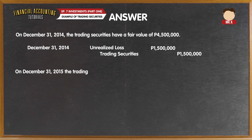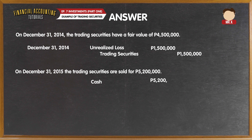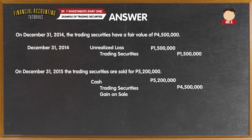Lastly, on December 31, 2015, the trading securities are sold for 5,200,000 pesos. The sale is recorded by debiting cash — 5,200,000 pesos; and crediting trading securities — 4,500,000 pesos, which is the fair value at December 31, 2014; and gain on sale of trading securities — 700,000 pesos.